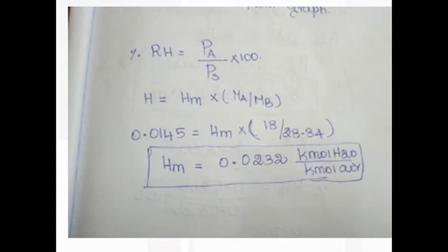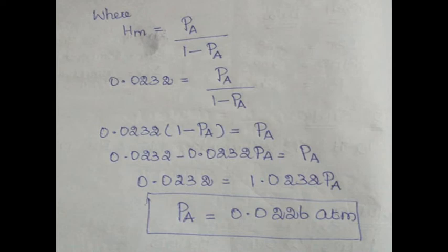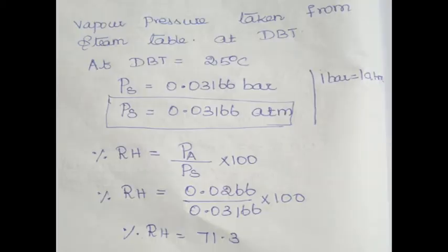Substituting all values, absolute molal humidity HM = 0.0232 kmol of water per kmol of air. Once we know the absolute molal humidity, we can determine the partial pressure using the formula: HM = PA / (1 − PA). HM is known (0.0232), and solving for PA gives: PA = 0.0226 atmosphere. This is how we calculate the partial pressure value.